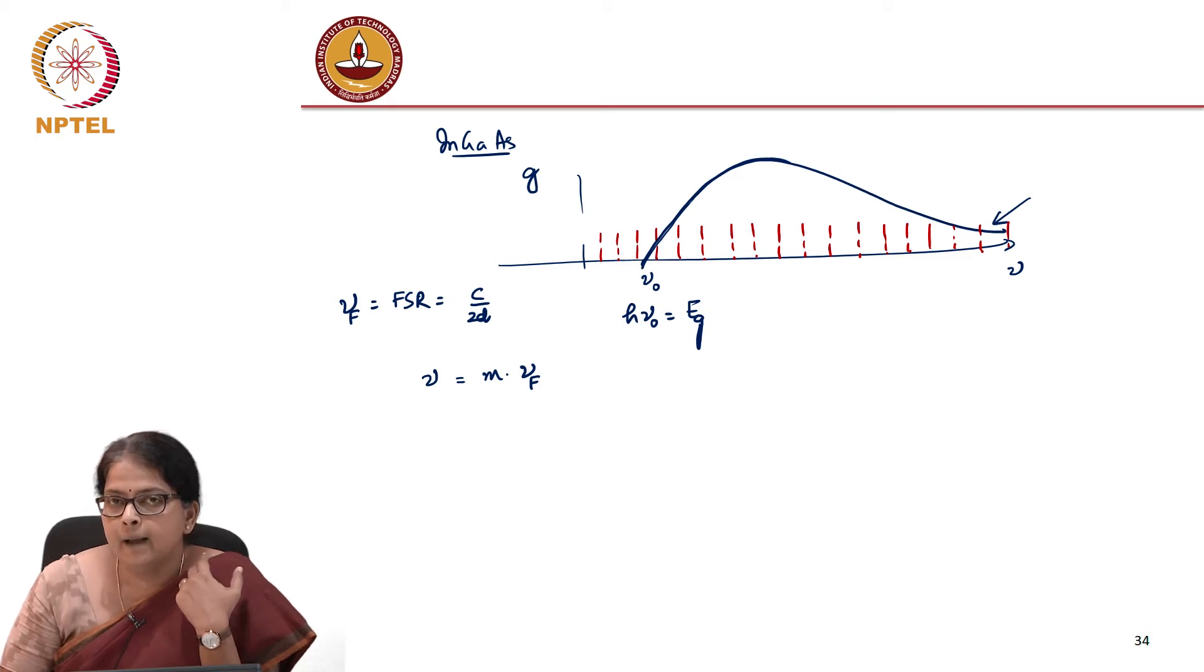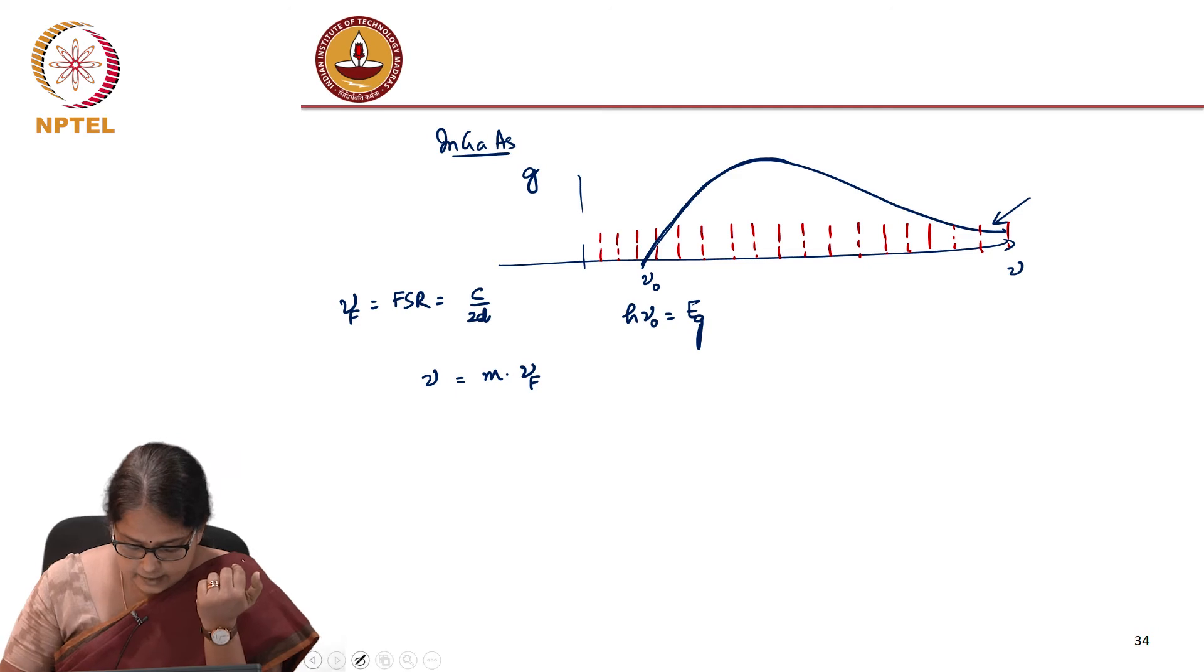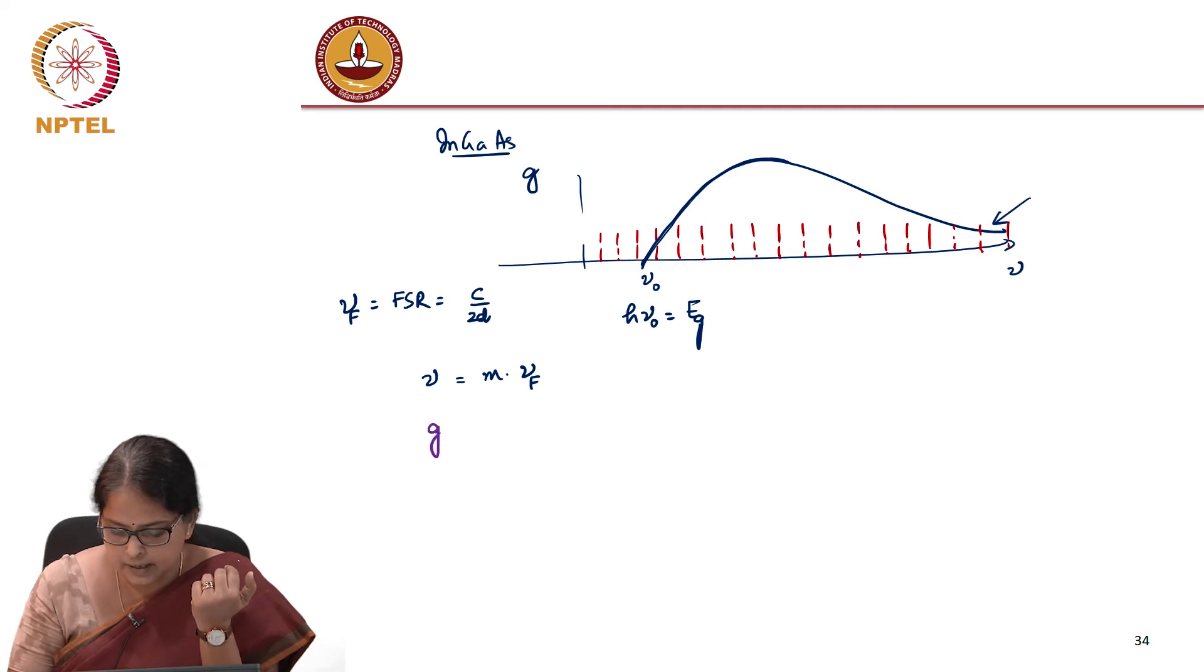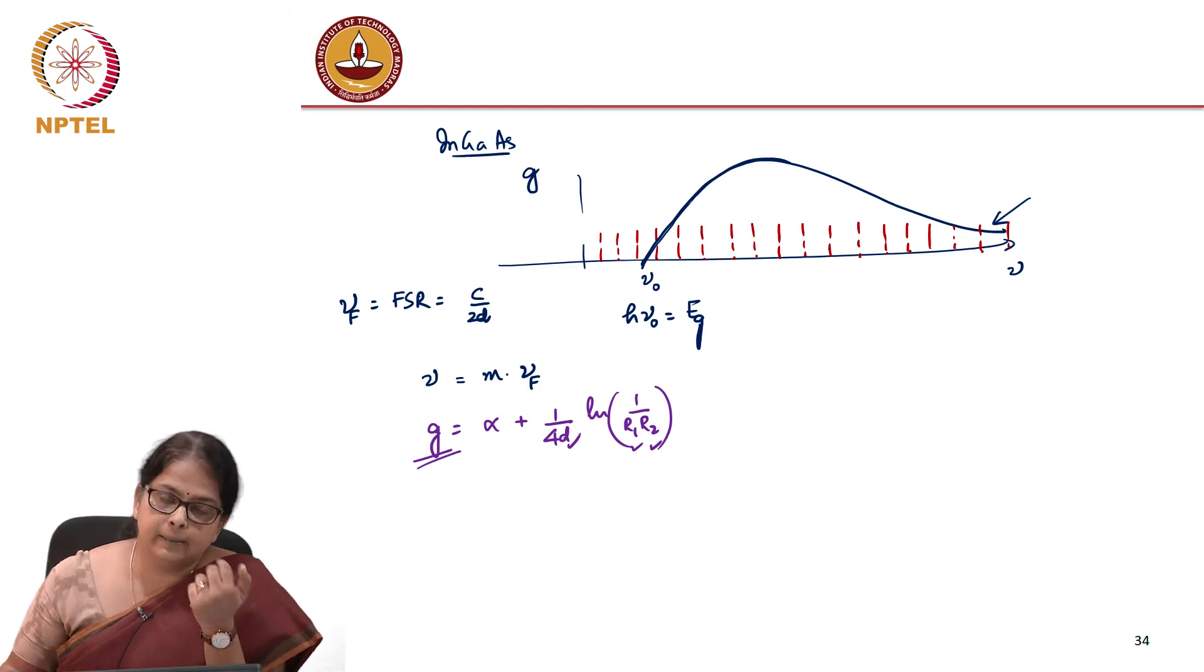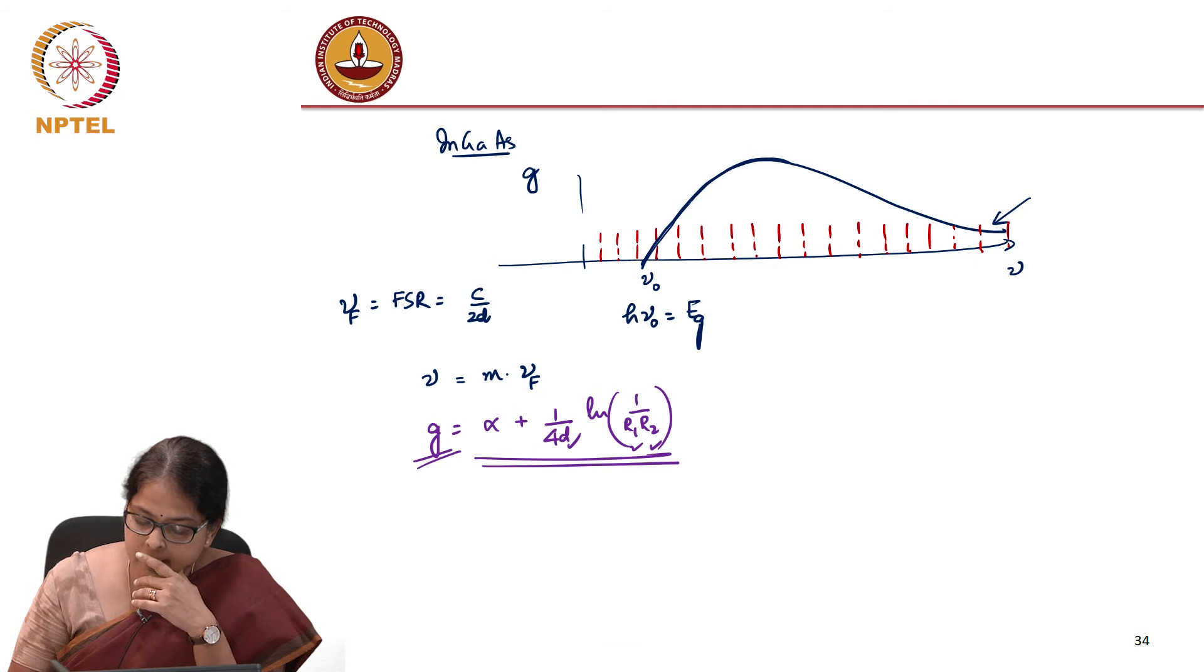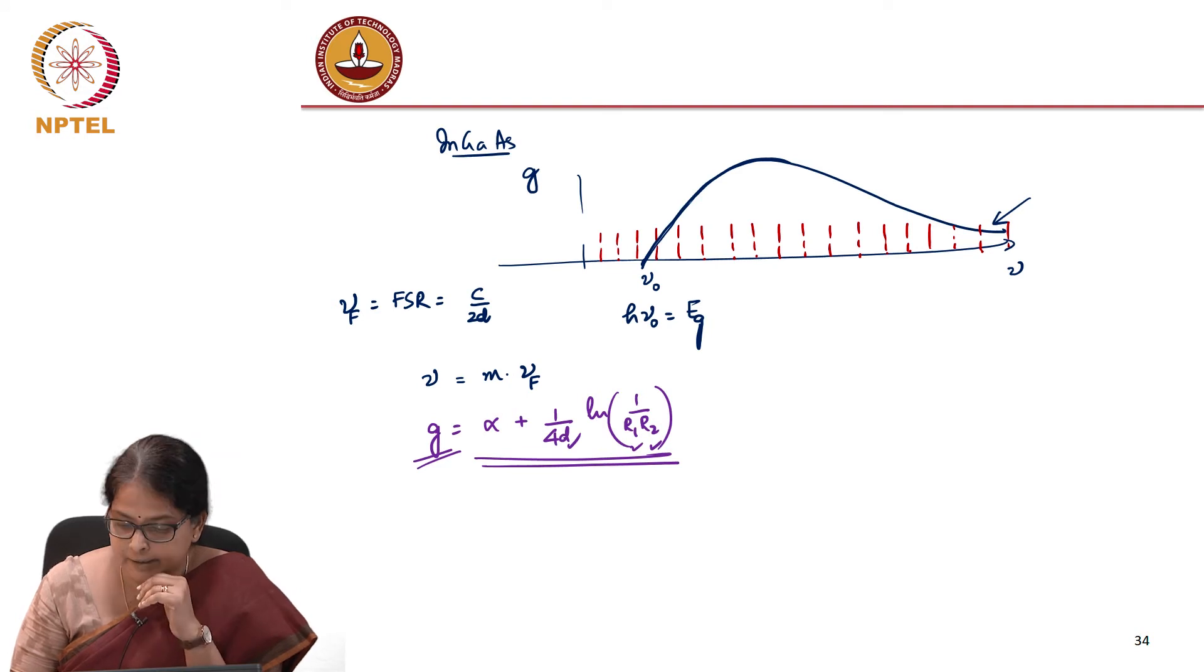The blue line actually represents the allowed frequencies or the gain provided by the material. There is a lower cutoff frequency. And our gain condition, we know that the minimum gain must be equal to α + 1/(4d) × ln(1/(r₁r₂)). So once I have formed the cavity, have picked my r₁, r₂, I know what my α is, I know what my d is, I know what is the minimum gain that is required.